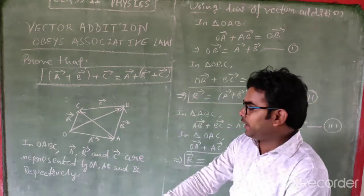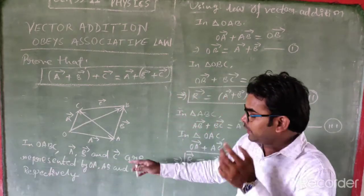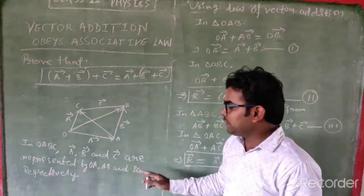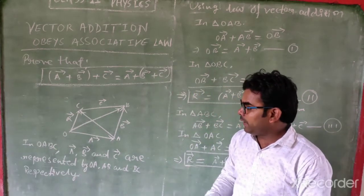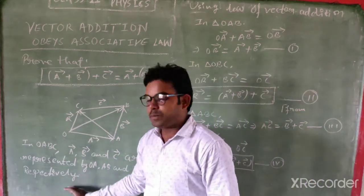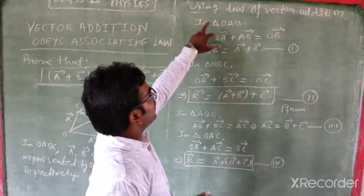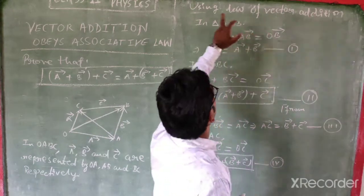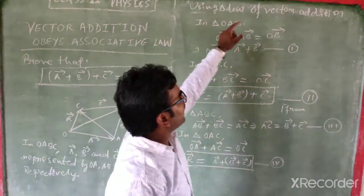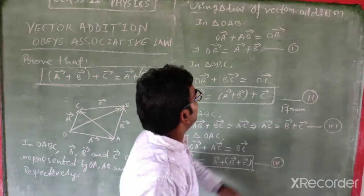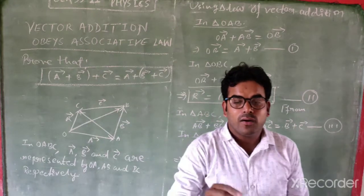In quadrilateral O, A, B, C — vector A, vector B and vector C are represented by OA, AB and BC respectively. Using the triangle law of vector addition in triangle OAB: according to the triangle law, if two sides of a triangle show vectors, then the resultant of these vectors is given by the third side of the triangle.